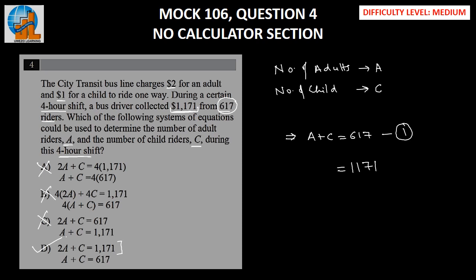Let us understand how much these adults are paying. Each adult is paying $2, which means the total money paid by the adults would be 2A. Each child is paying only $1, which means the total amount of money paid by all the children would be 1 times C, which implies 2A plus C equals $1,171.